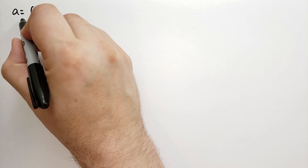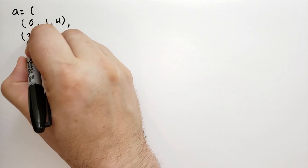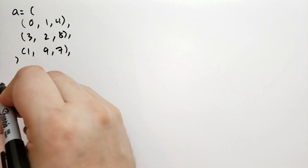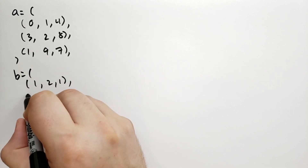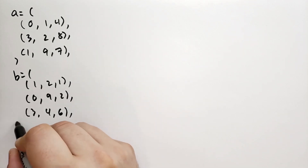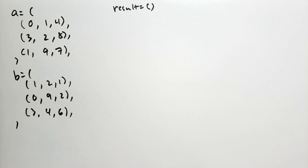We can, and frequently do, nest for loops. In this code we have two matrices represented by tuples of tuples — three by three matrices. The first matrix has rows (0, 1, 4), (3, 2, 8), and (1, 9, 7). The second matrix has rows (1, 2, 1), (0, 9, 2), and (3, 4, 6). We're going to build up the result, starting with an empty tuple, building each row item by item.